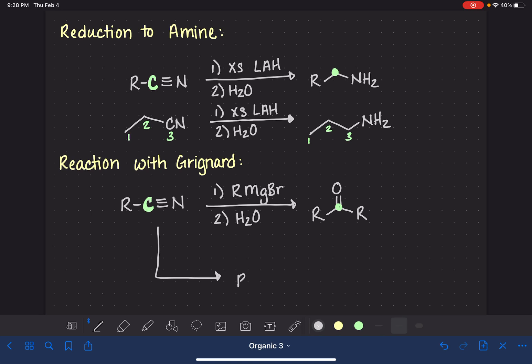The Grignard reagent produces an imine, converts the nitrile into an imine. And the imine is not further reactive with the Grignard. So the reaction stops here. And then with the H2O+, the hydrolysis, the imine is hydrolyzed to form the ketone. So it's kind of like a sneaky way of synthesizing a ketone using a Grignard reaction.